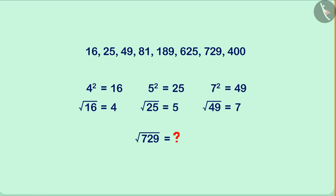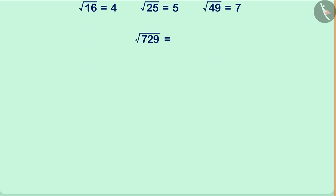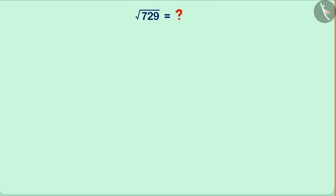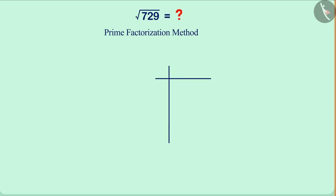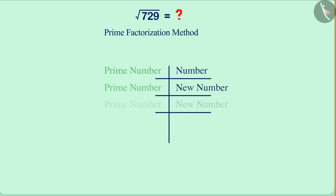It is not essential that we must always remember the square root of all perfect squares, because we can find the square root of any number using different methods. So let us find the square root of 729 using the prime factorization method. As per the name of this method, we have to do the prime factorization of the number. In this method, we divide the number by prime numbers until we get a prime number or 1.